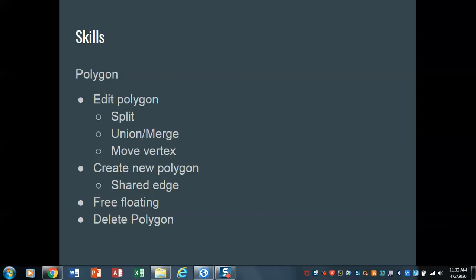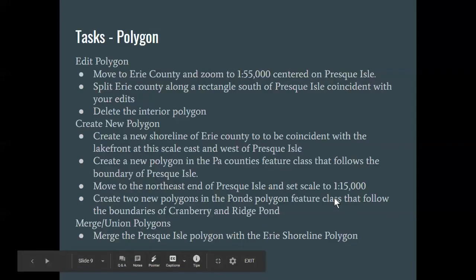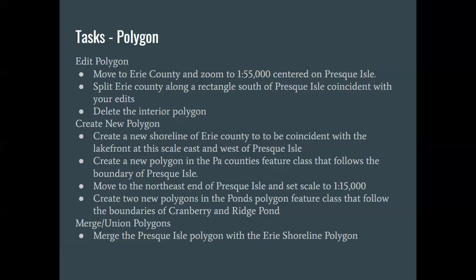This is also possible between feature classes. Specifically, what I want you to be able to do is we're going to go in and create the new shoreline in that area of Erie County, so it's coincident with the lakefront. And then you're going to create another polygon that abuts that, which is the shape of Presque Isle. Let's get started.